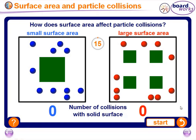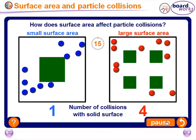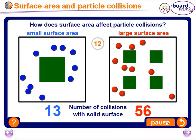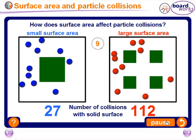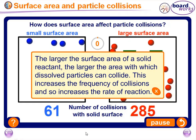Now let's imagine how surface area affects the rate of reaction. We have the same mass of this green substance — the four pieces are equal in mass to the one large piece. Counting the number of collisions: as we see, the number of collisions increases with larger surface area. The larger the surface area of a solid reactant, the larger the area with which dissolved particles can collide, increasing the frequency of collisions and so increasing the rate of reaction.